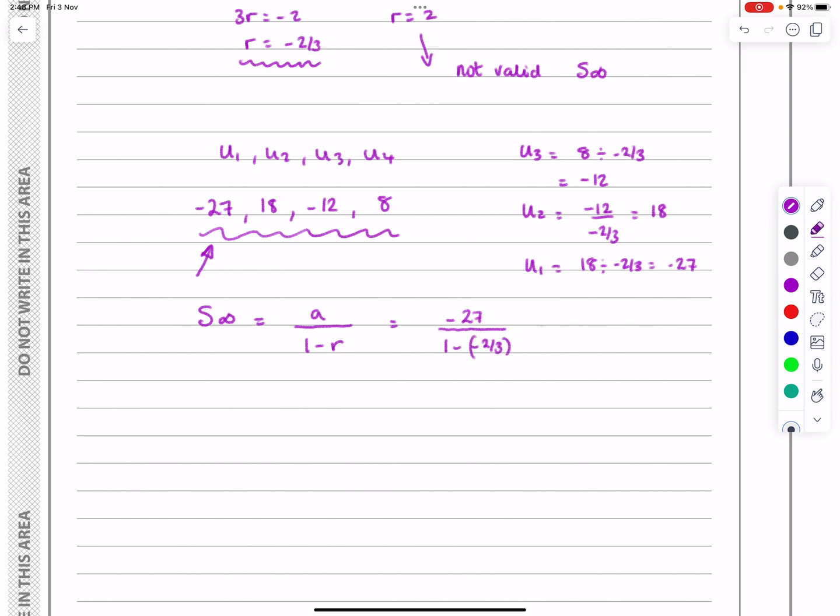Put it in a bracket if you want to. And let's see what that works out to be. Just stick it into the calculator. Works out to be minus 81 over 5. So the sum to infinity of this sequence, which as you can see, is getting, the terms are getting smaller and smaller each time. Going from positives to negatives. But anyway, it works out to be minus 81 over 5. Hopefully that will make sense.